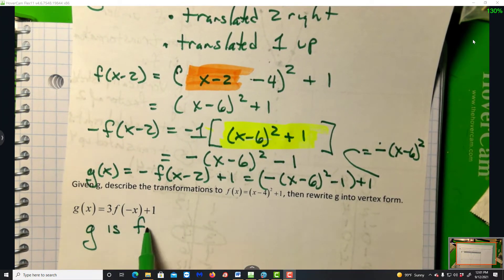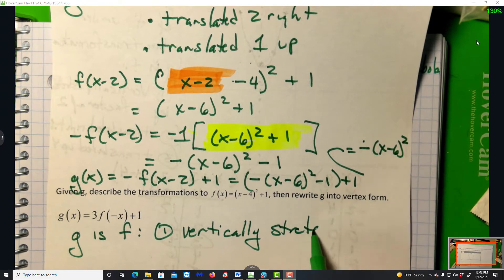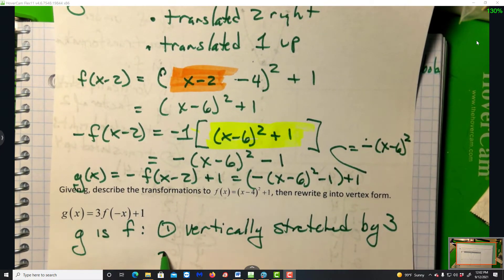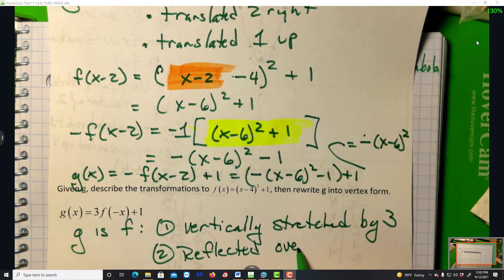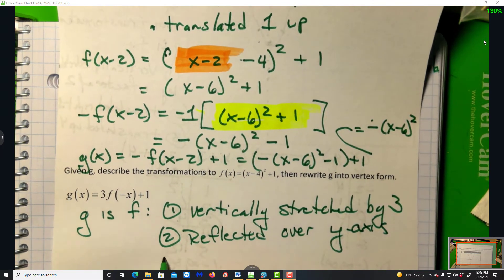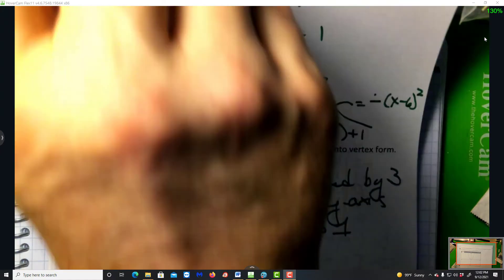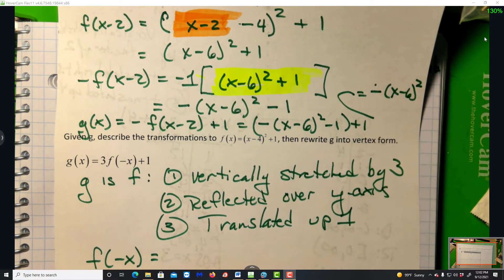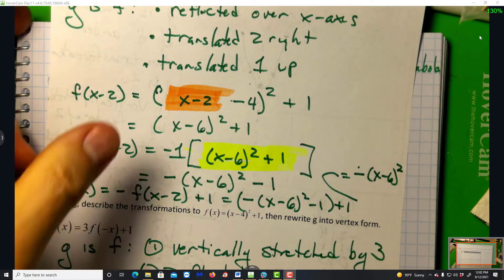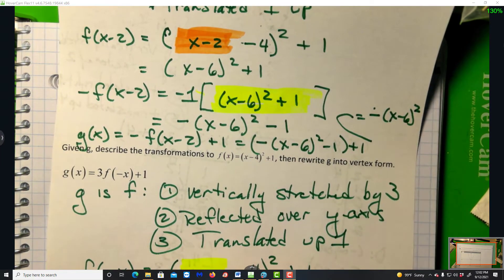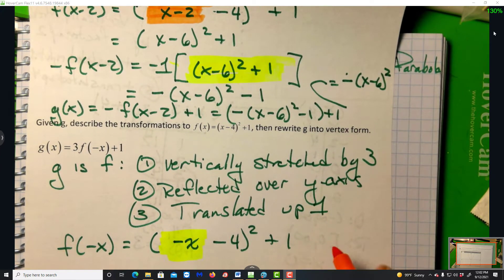Now why don't you go ahead and pause the video and you try this one. So G is F, vertically stretched by a factor of 3, reflected over the y-axis. Remember, that's the line x equals 0. Now let's put Humpty Dumpty back together again. This says go into the rule for F of x. Where I see x, replace it with minus x.